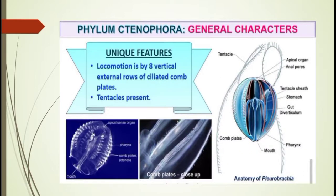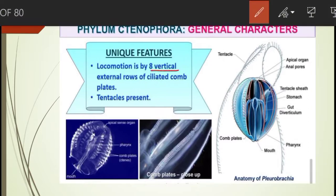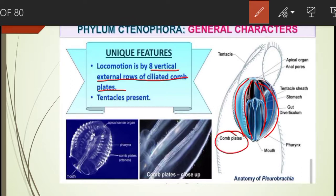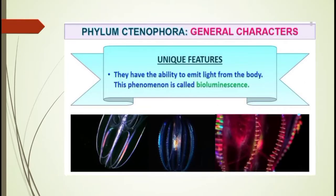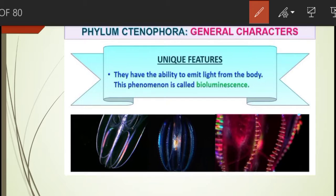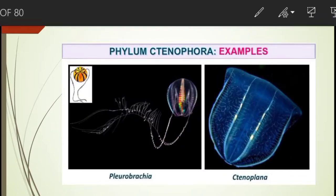Some unique features of ctenophores: they have eight vertical external rows of ciliated comb plates, which you can see in the diagram, and with which they move from one place to another. They have tentacles on their body for movement and sensing changes in surroundings. Bioluminescence is also well marked in ctenophores — this is the property of a living organism to emit light. Examples of Ctenophora include Pleurobrachia and Ctenoplana.